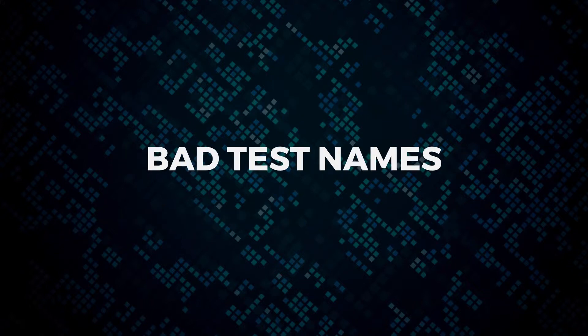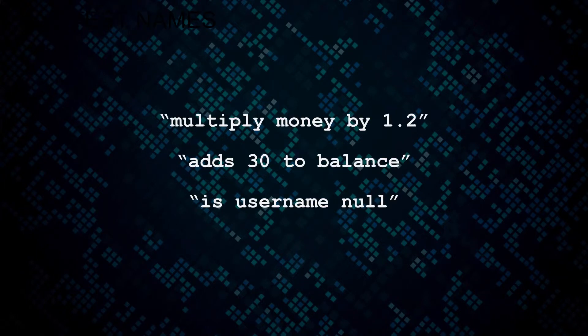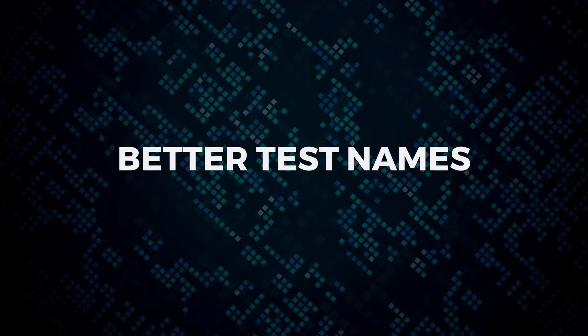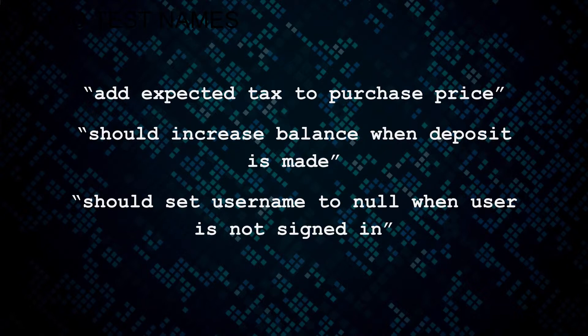Let me show you some examples of bad test names: things like 'multiply money by 1.2', 'adds 30 to balance', 'is username null' — they don't really tell you why the test is doing something. I always say you should name your test with the why and not the how. So better names would be: 'add expected tax to purchase price' rather than multiply by 1.2; 'should increase the balance when deposit is made' rather than adding an arbitrary number; and 'should set username to null when the user is not signed in'.